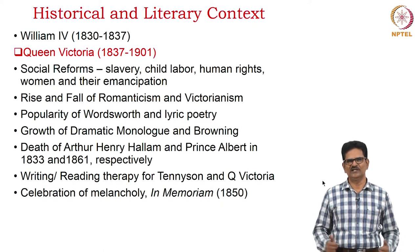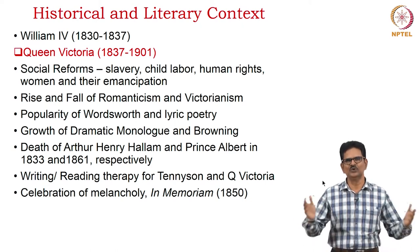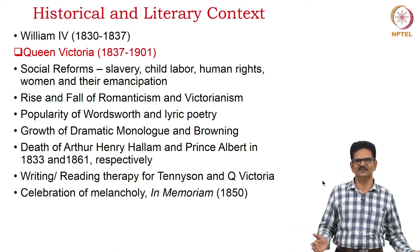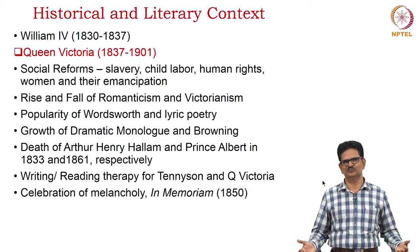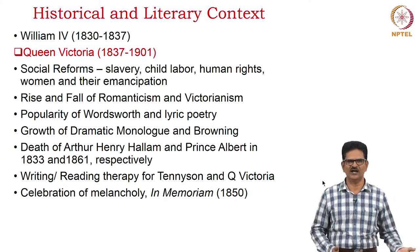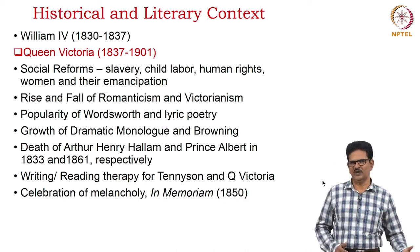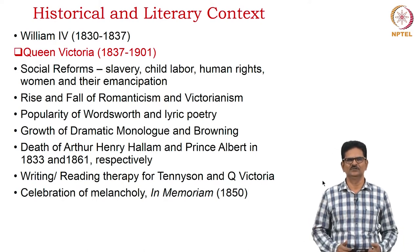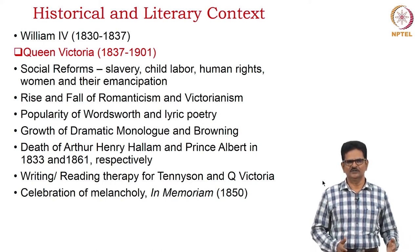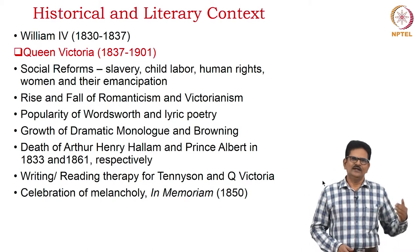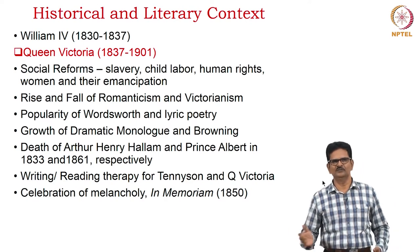William IV was ruling this country from 1830 to 1837. Then comes Queen Victoria, who ruled Britain for a long time from 1837 to 1901. During this period, many social reforms took place regarding slavery, child labour, human rights, and women's emancipation. We see the rise and fall of both Romanticism and Victorianism at this time. The popularity of Wordsworth and lyric poetry continued in this period through Tennyson.